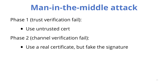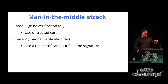If phase one breaks, then all you have to do is use some untrusted certificate and the client will say, okay, this is a real trusted certificate. If there's a problem in phase two, then you can use a real certificate but a fake signature.